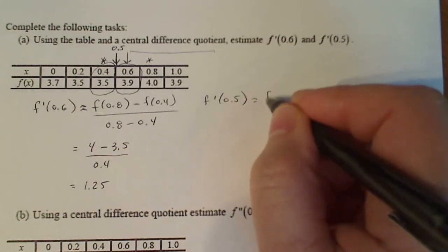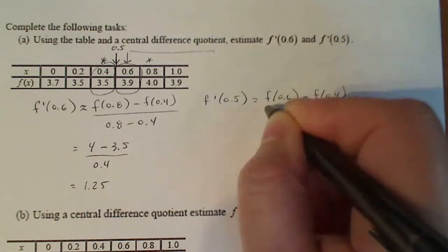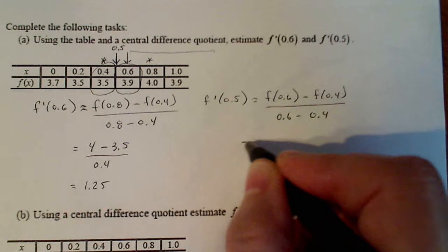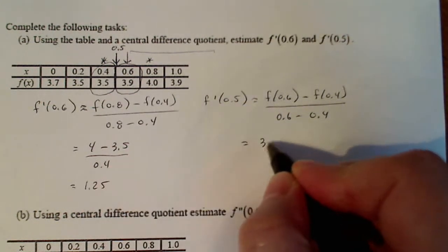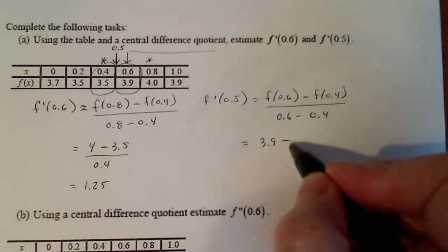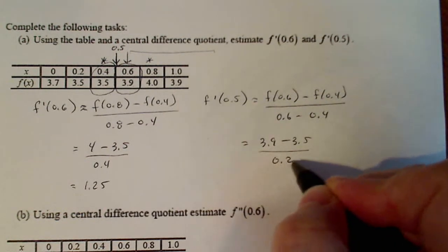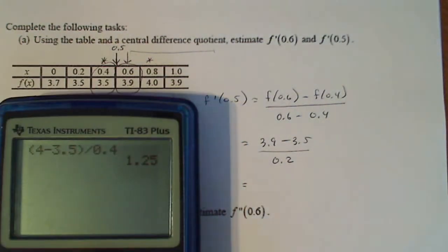So that's going to be f of 0.6 minus f of 0.4 divided by 0.6 minus 0.4. So f of 0.6 is 3.9, f of 0.4 is 3.5, the difference between these two is 0.2. So let's see what that number turns out to be.